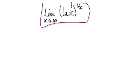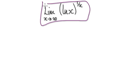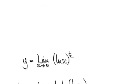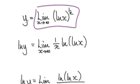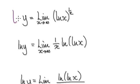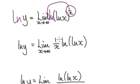Let's say this whole limit here is y. We're going to say the whole limit is y, and we are seeking this y. Now take the natural log of both sides — take the natural log of this, and this will go down.